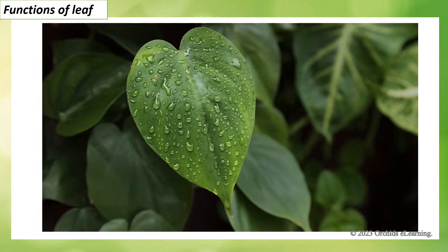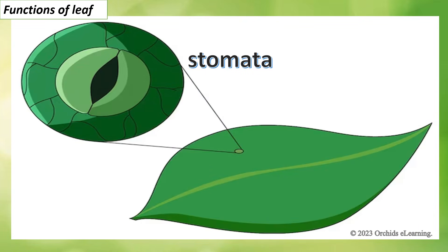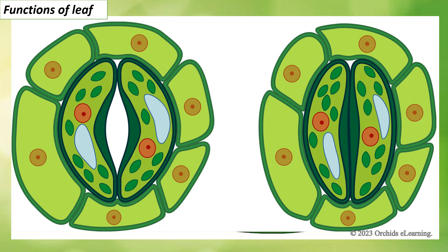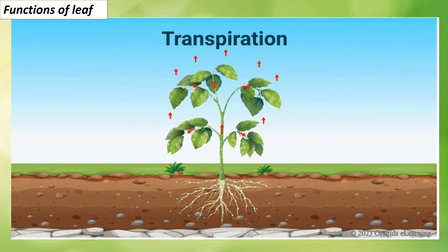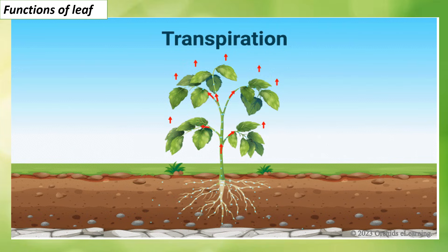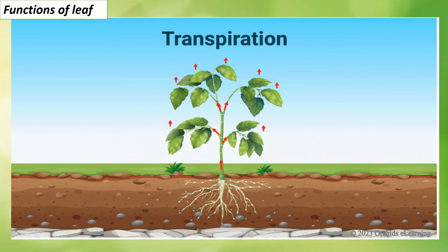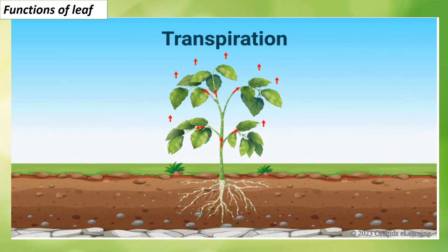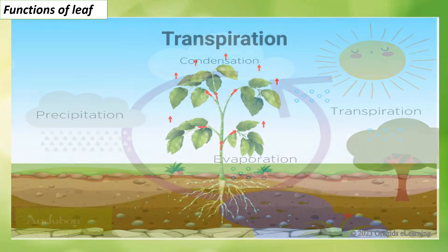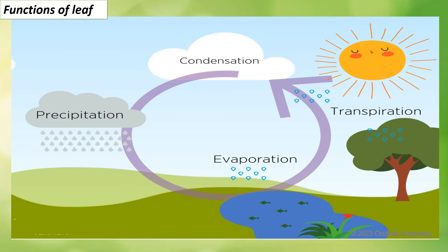Plants breathe with the help of their leaves. Leaves of most plants have tiny openings called stomata under their surface; the exchange of gases takes place through the stomata. Leaves also lose water through stomata — this loss of water is called transpiration. Transpiration helps the plant in various ways: it helps in cooling the leaves, just as loss of water during sweating keeps our bodies cool. During transpiration, more water is pulled upwards from the roots to compensate for the lost water, bringing along important nutrients. Transpiration also plays an important role in the water cycle.